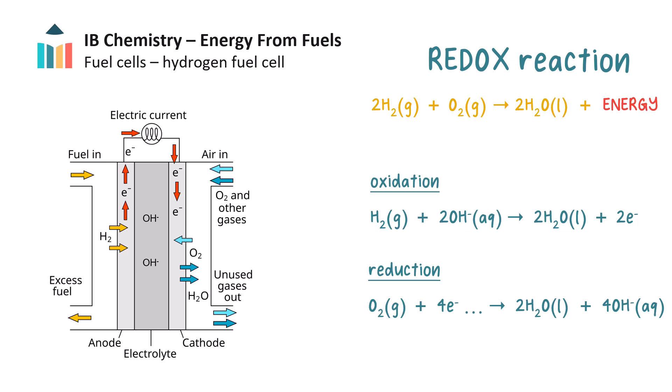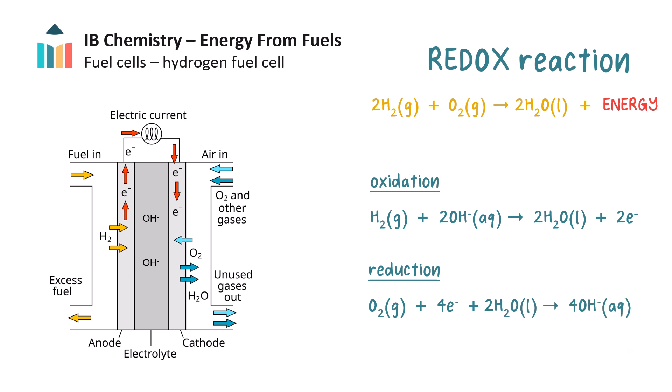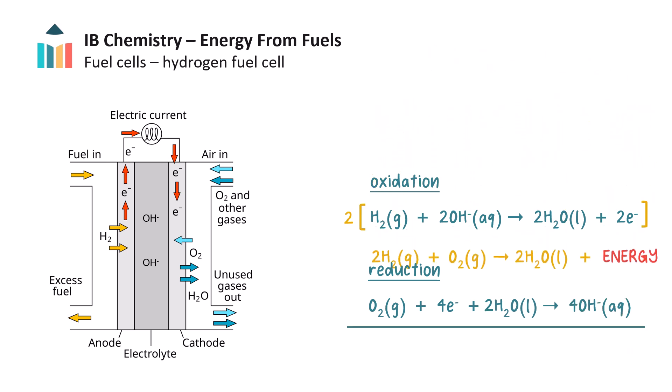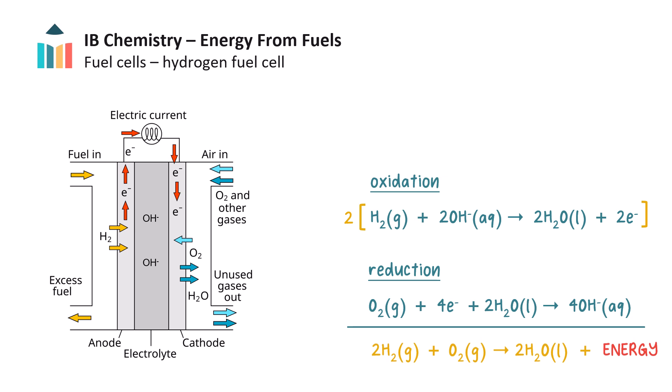Now the charges are balanced. We can add water to the left side to ensure all oxygens and hydrogens are balanced. Then we simplify. Finally, if we add the two half equations, we get the net overall equation. This clean energy system can run continuously as long as hydrogen and oxygen are supplied.